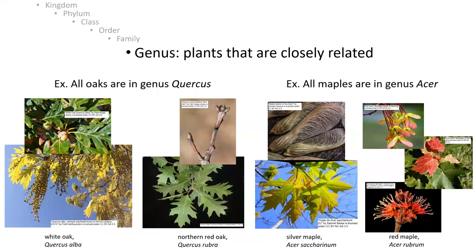Taking a step down further below the family, we have the genus. These are plants that are really closely related. For instance, all oaks are in the genus Quercus. We have our northern red oak, Quercus rubra — rubra referring to red — and our white oak, Quercus alba.